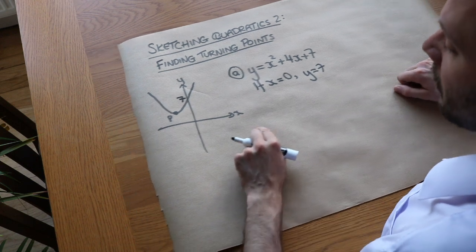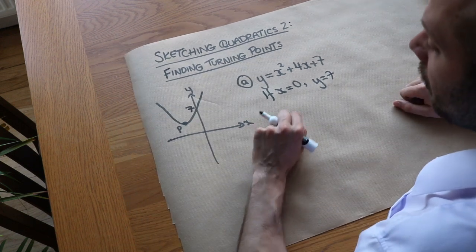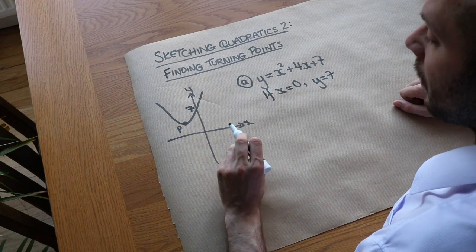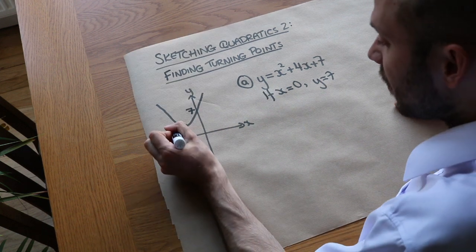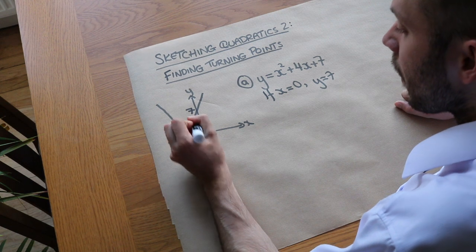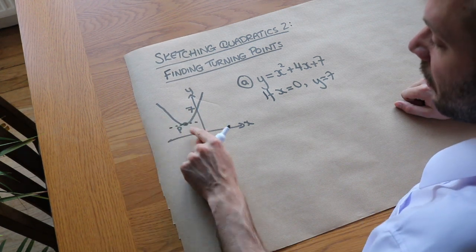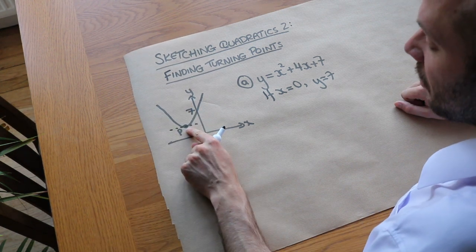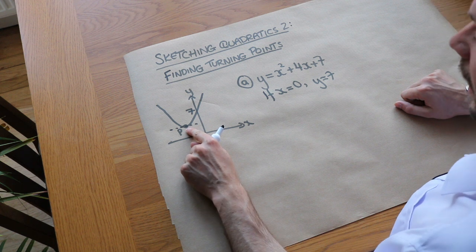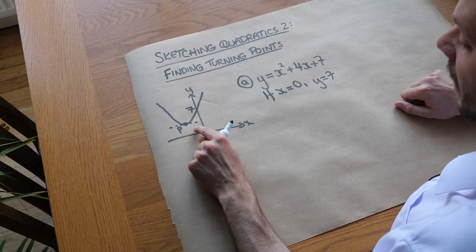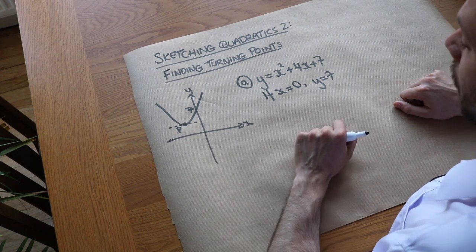We might also want to find the turning point. The turning point of a graph is where the gradient is zero — where it's completely horizontal, neither going uphill nor downhill. In this particular case, we call that a minimum point.